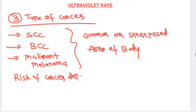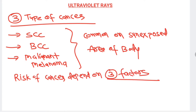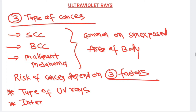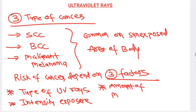The risk of cancer development depends on three factors, since not every individual develops cancer. These are: one, the type of ultraviolet rays; two, the intensity of exposure; and three, the amount of melanin concentration in the skin epidermis.